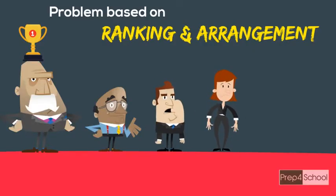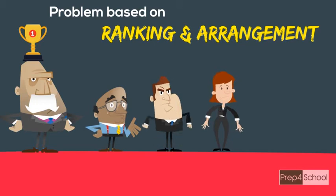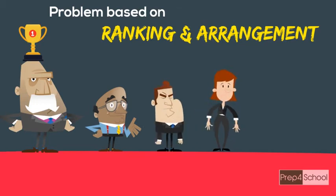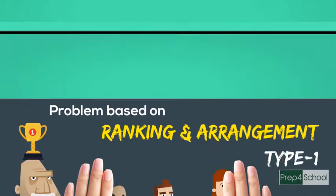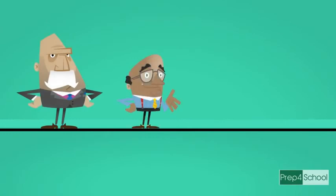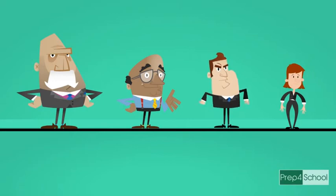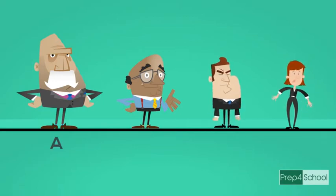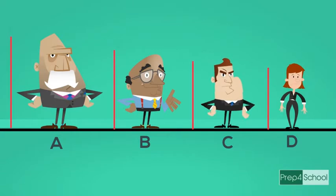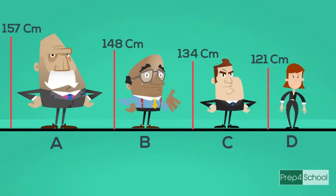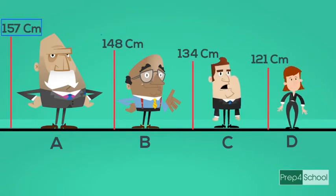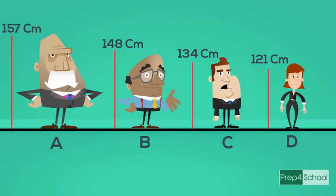In this lesson we can learn about the ranking order based on height, weight, etc. In order to understand this type of problem, let's take a discussion like this: there are four people named A, B, C, and D, and their corresponding heights are given as 157 centimeters, 148 centimeters, 134 centimeters, and 121 centimeters.